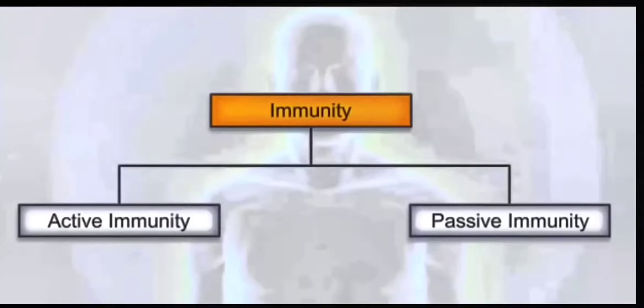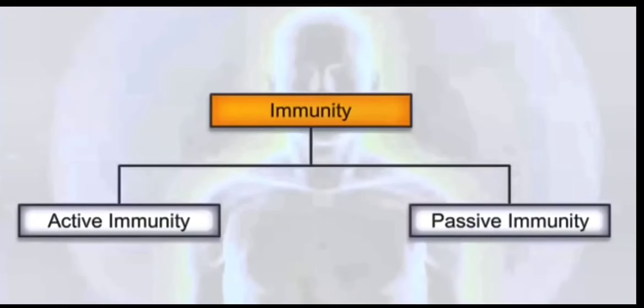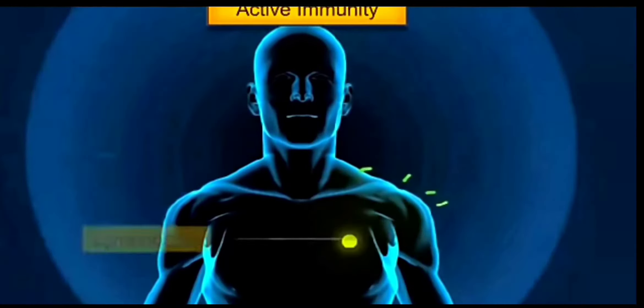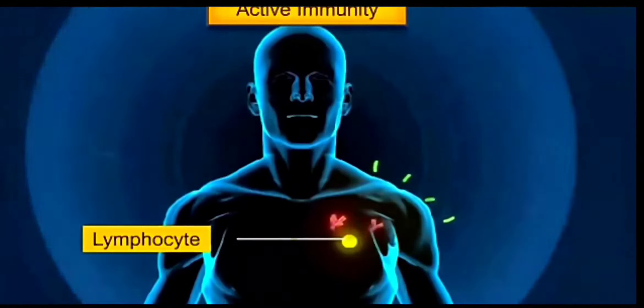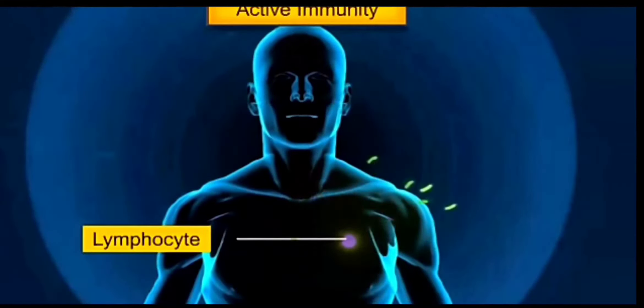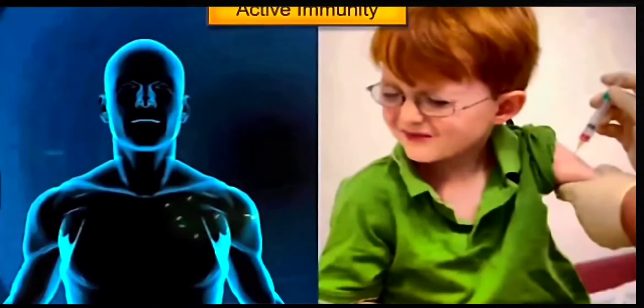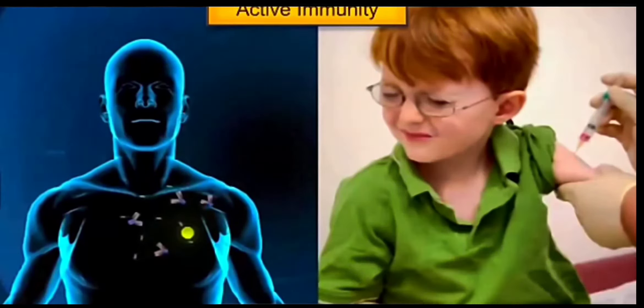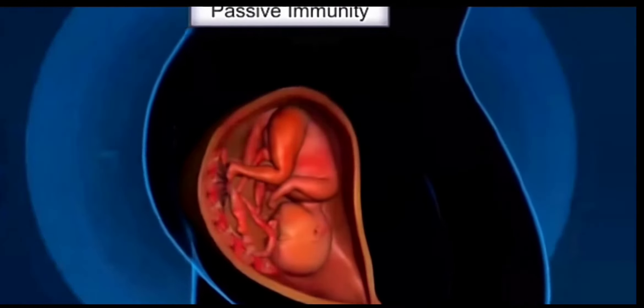Now again, this immunity can be of two types: active immunity and passive immunity. First of all, what is active immunity? Active immunity is the ability of our body to fight against disease whenever any pathogen enters our body. So whenever this pathogen enters our body, our lymphocytes produce antibodies against it. The whole immunization program is based on active immunity. This active immunity is basically done by vaccination. With the help of vaccination, a small amount of pathogen is introduced into the body. In response to that, our body produces the antibodies against it.